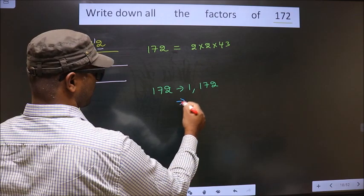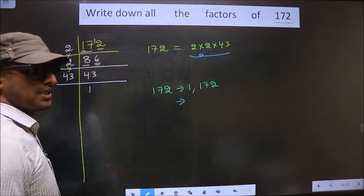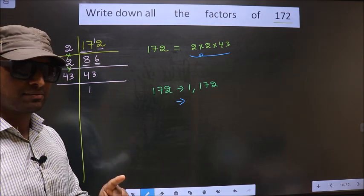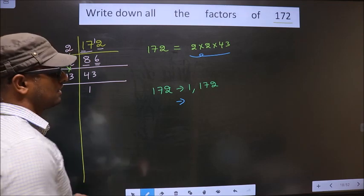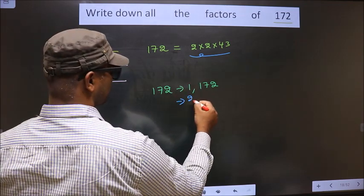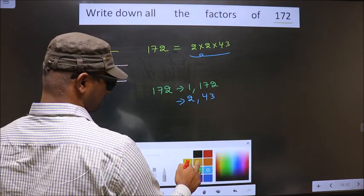Next. Now, from these numbers, from these numbers, now you select one different number at a time. Like that, how many numbers do you get? You get 2 and 43. That's it.